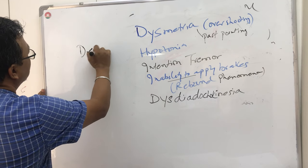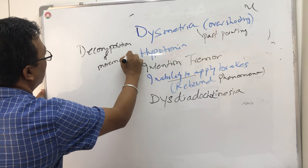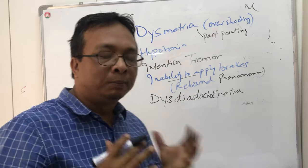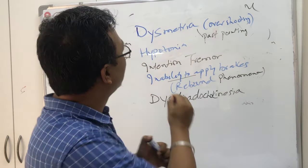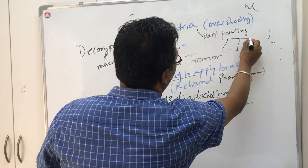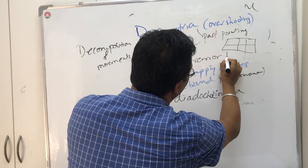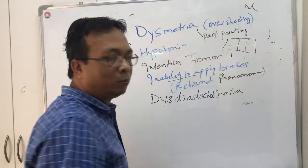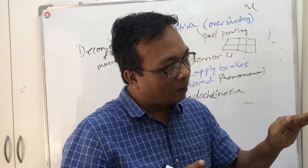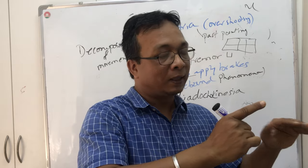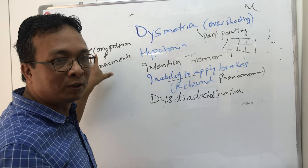Next is decomposition of movements. Movements are decomposed - when you have to think for every step of the movement. Suppose you have to walk up the stairs: you put one leg, then you have to think what to do next, then you put the next leg, thinking with every step what your movement should be. That is called decomposition of movements, because the planning is lost.